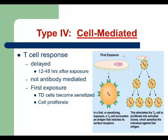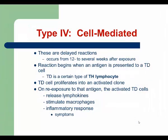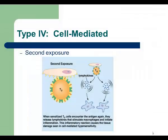When a patient gets exposed to a certain allergen for the first time, it activates Td cells — a type of T-helper cell. Td cells get activated, start proliferating, and produce clones of Td cells, but the patient doesn't develop any symptoms yet. Then, if the same patient gets exposed to the same allergen again, those Td cells are activated and produce a lot of inflammatory mediators. This activates phagocytes and macrophages, which produce even more inflammatory mediators, and patients start developing symptoms of type 4 hypersensitivity reaction.